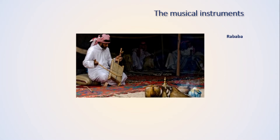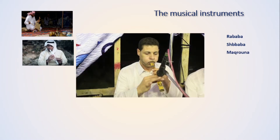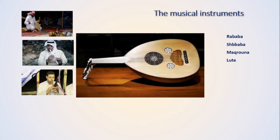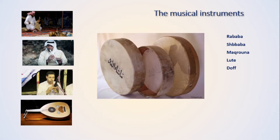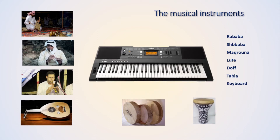We will start with the Rababa — this type of musical instrument is not the same as the normal Rababa you know; it is a little bit different in its shape. They also have something they call the Shababa, which looks like the Nai but is close to it. Then there is the Makrona, or sometimes called Magrona, which is a couple of Nai instruments together with a special way of producing the tune. We also have the Lout, which has been common in the area for a long time, the Duff, which is very important for the rhythm, and the Tabla. Nowadays they also use the keyboard.